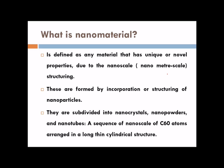What is a nanomaterial? It is defined as any material that has unique or novel properties because of its nanometer-scale structure. These are formed by incorporation or structuring of nanoparticles, and they are subdivided into nanocrystals, nanopowders, and nanotubes — for example, a sequence of C60 atoms arranged in a long thin cylindrical structure.